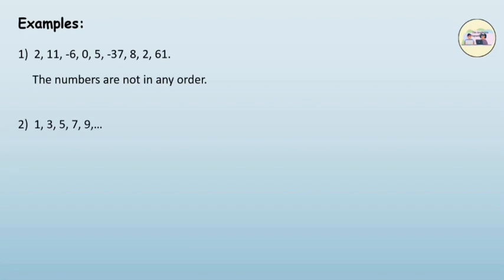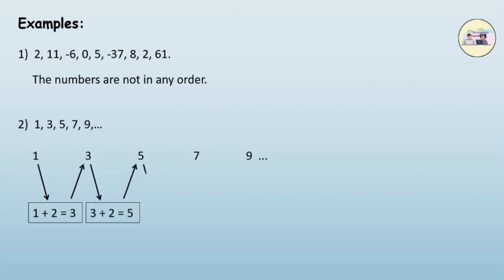Now see the numbers 1, 3, 5, 7, 9. The numbers are in order because if you add 2 to the previous number, you will get the next. 1 plus 2 is 3, 3 plus 2 is 5, 5 plus 2 is 7, and 7 plus 2 is 9.